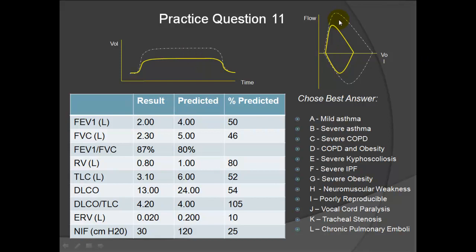Question 11: We recognize this pattern as restriction with no obstruction, confirmed by a normal ratio. The TLC and diffusion are down together at 52%, indicating a non-interstitial process — the lungs are healthy, just small. The ERV is low, which can be seen in obesity but also in neuromuscular weakness. This example is very similar to the obesity case, with the same numbers, except the negative inspiratory force is only 25% of predicted — consistent with answer H, neuromuscular weakness, such as myasthenia gravis or Guillain-Barré.